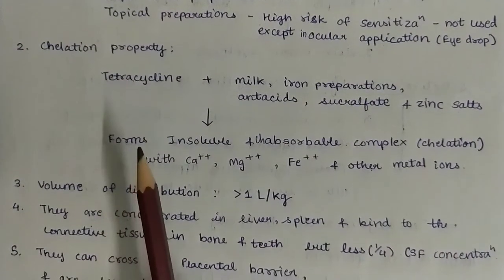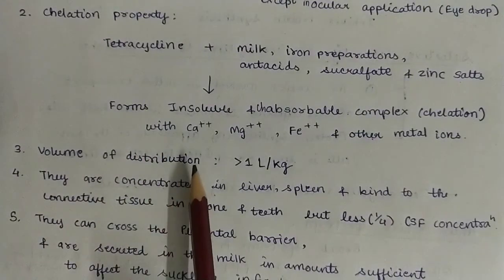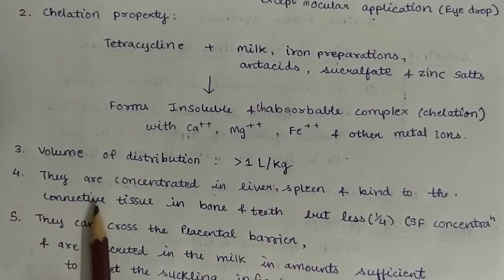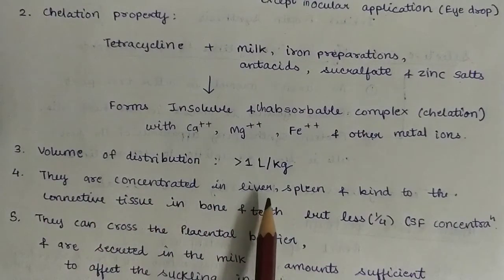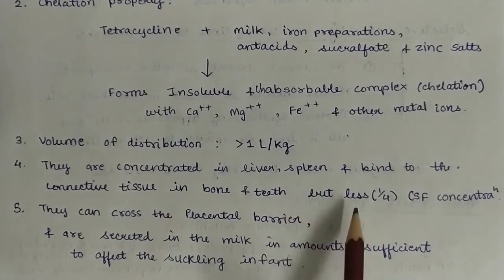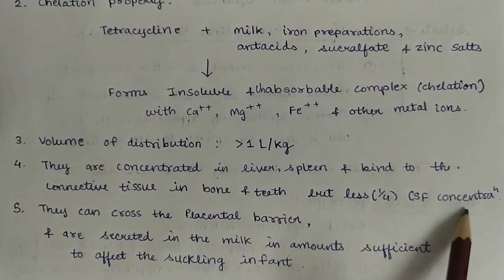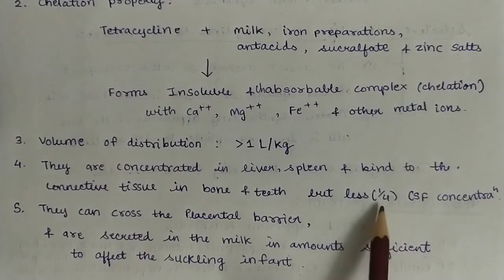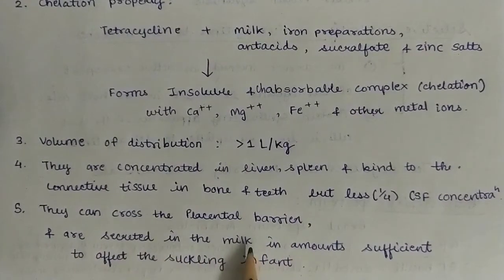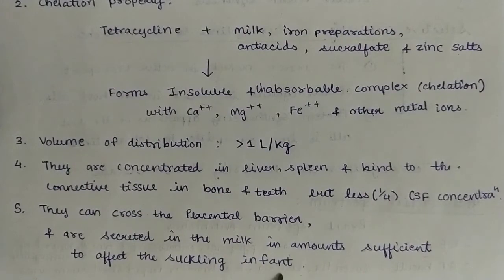Volume of distribution is more than 1 litre per kg. They are concentrated in the liver and spleen, and bind to connective tissue in bone and teeth, but have less CSF concentration — approximately one-fourth. They can cross the placental barrier and are secreted in milk in amounts sufficient to affect the suckling infant.